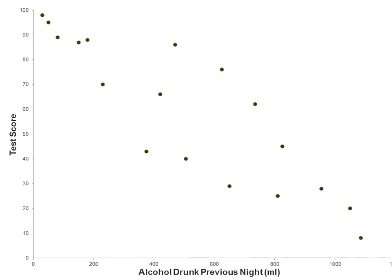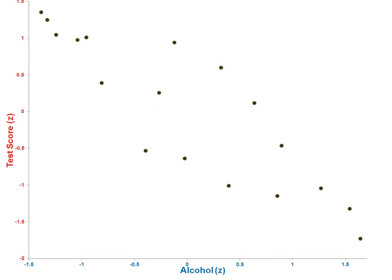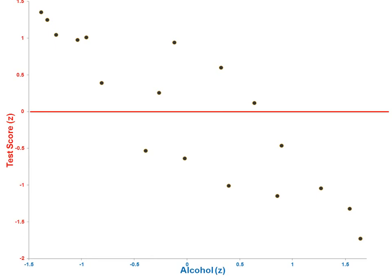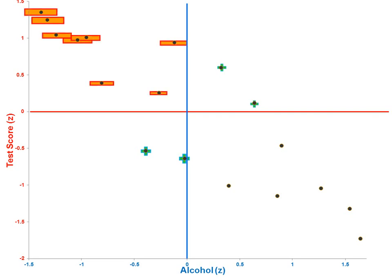Here's another example: amount of alcohol you drank last night versus your test score. We can convert these into z-scores, with zero as the middle. We can draw lines dividing the quadrants. Everything in the upper-right will be positive when zx times zy is calculated; lower-left will also be positive. But upper-left and lower-right will be negative — and there are a lot of dots in those negative quadrants and not much in the positive ones. So if you add these up and take the average, you get something negative — and indeed this is what a negative correlation looks like in a scatter plot.